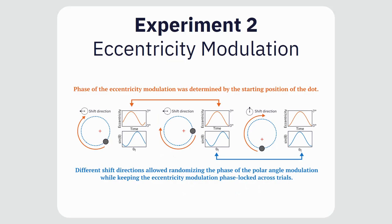We again manipulated the phase coherence of the eccentricity modulation by changing the starting position of the dot. We also shifted the rotation trajectory in different directions to cancel out the effect of the polar angle modulation. This allowed us to isolate the effect of the eccentricity modulation.